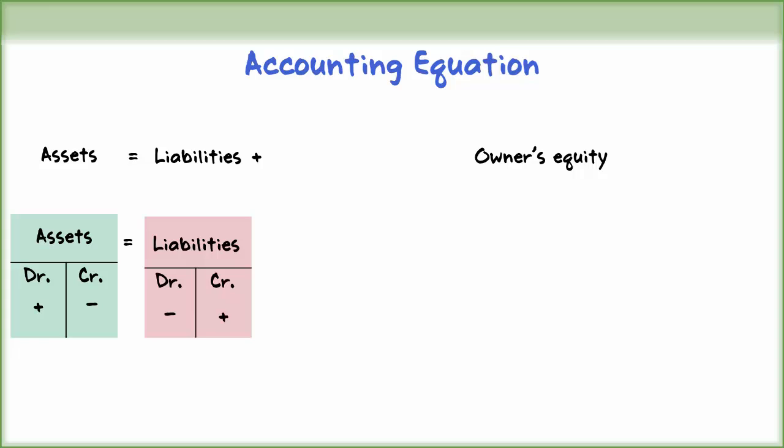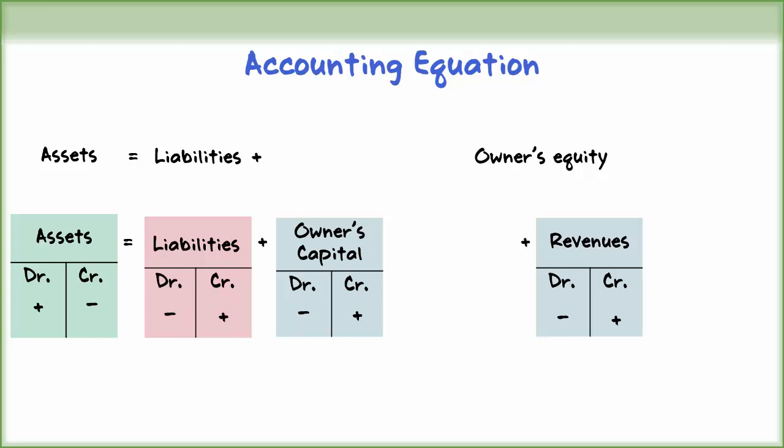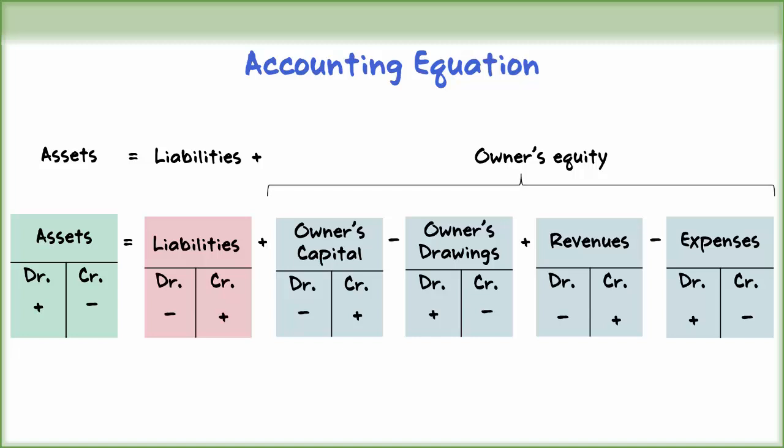Owner's equity is the ownership claim on the total assets of a business. It is equal to total assets minus total liabilities. It has a normal credit balance, increases with a credit, and decreases with a debit. Owner's investments and revenues increase owner's equity; both owner's capital and revenue have a normal credit balance. On the other hand, owner's drawings and expenses decrease owner's equity; both have a normal debit balance. This is called the expanded accounting equation.